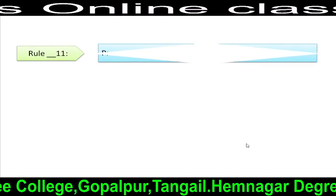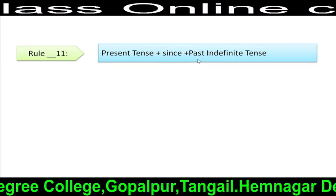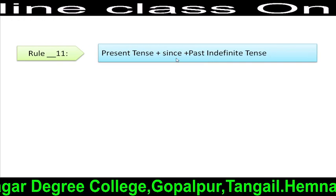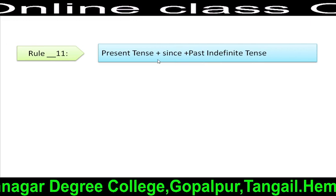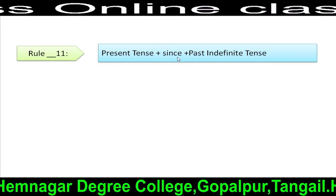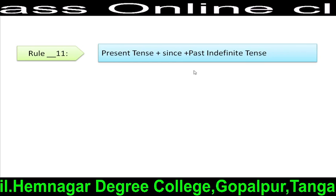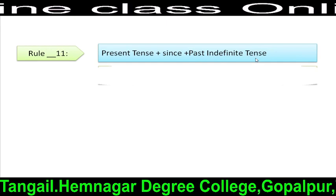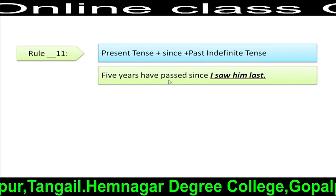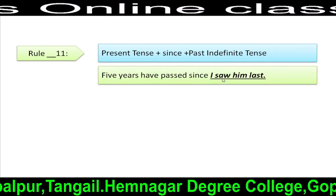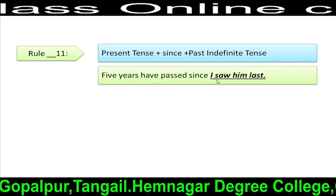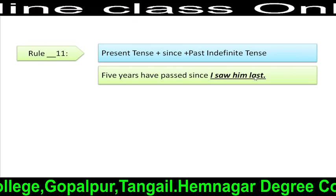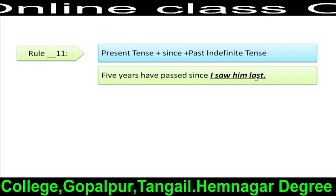Rule 11: Present perfect tense + since + simple past tense. That means, if we find present perfect tense with 'since', then in the incomplete part we have to use simple past tense. For example: '5 years have passed since I saw him last.' After 'since', we can see 'I saw him last' — an example of simple past tense.